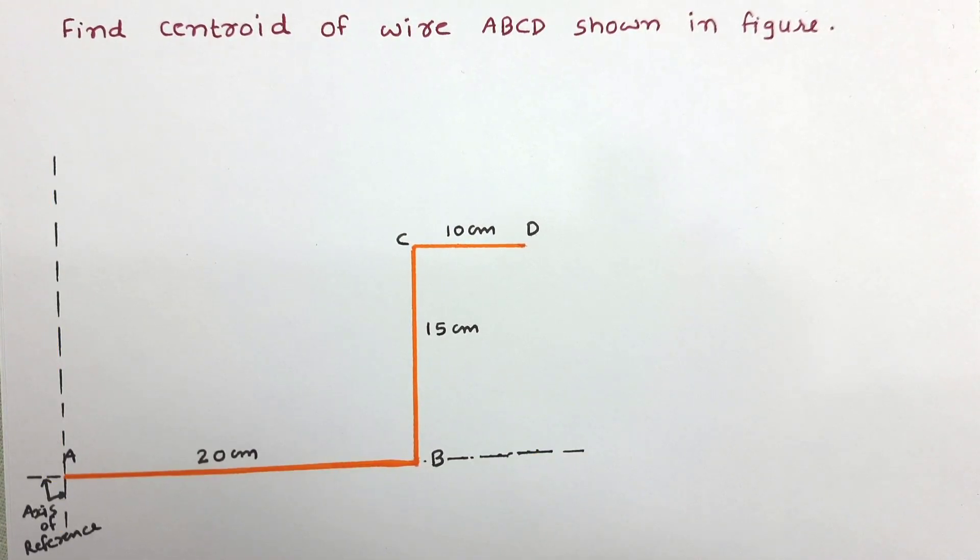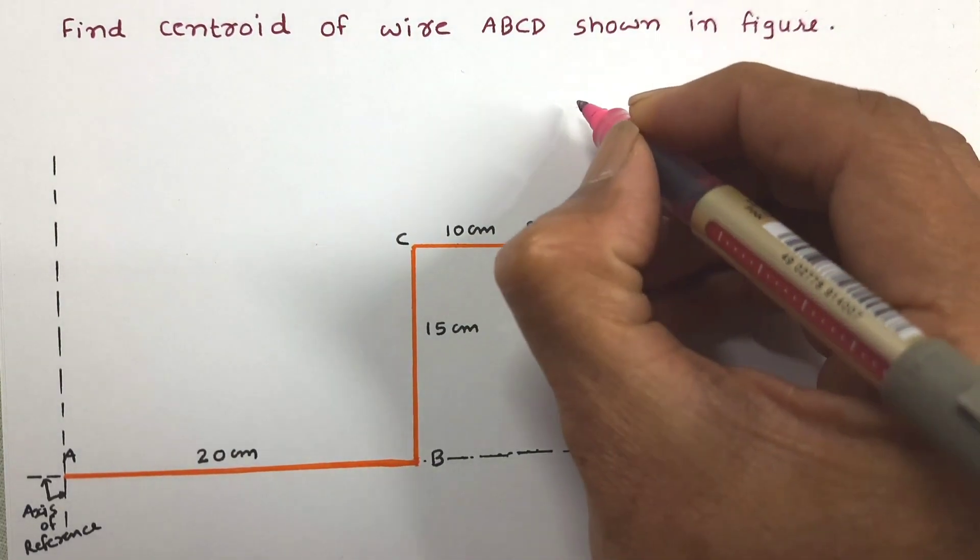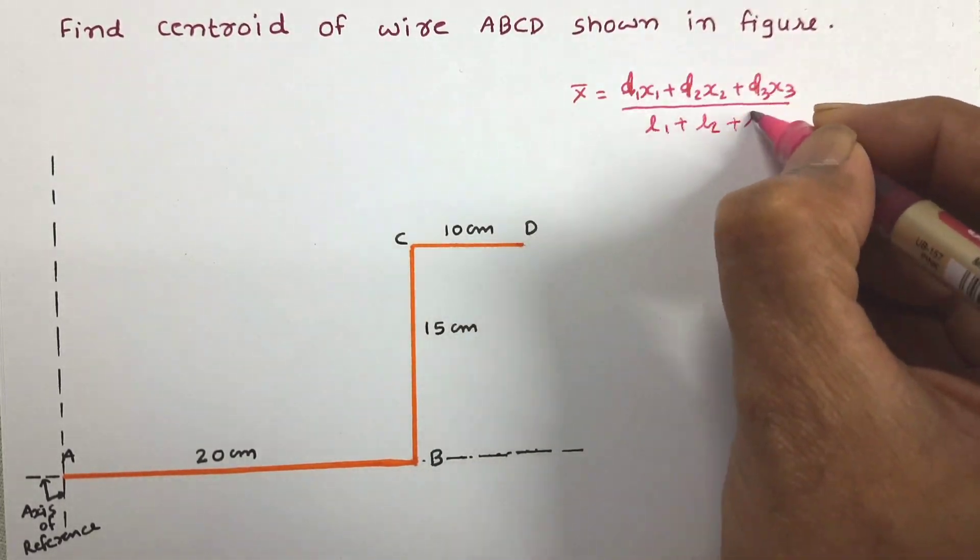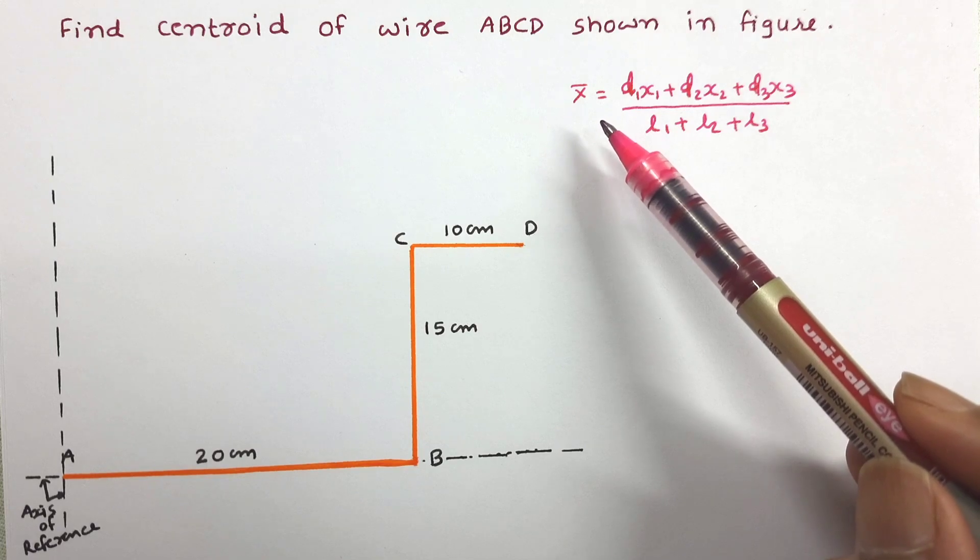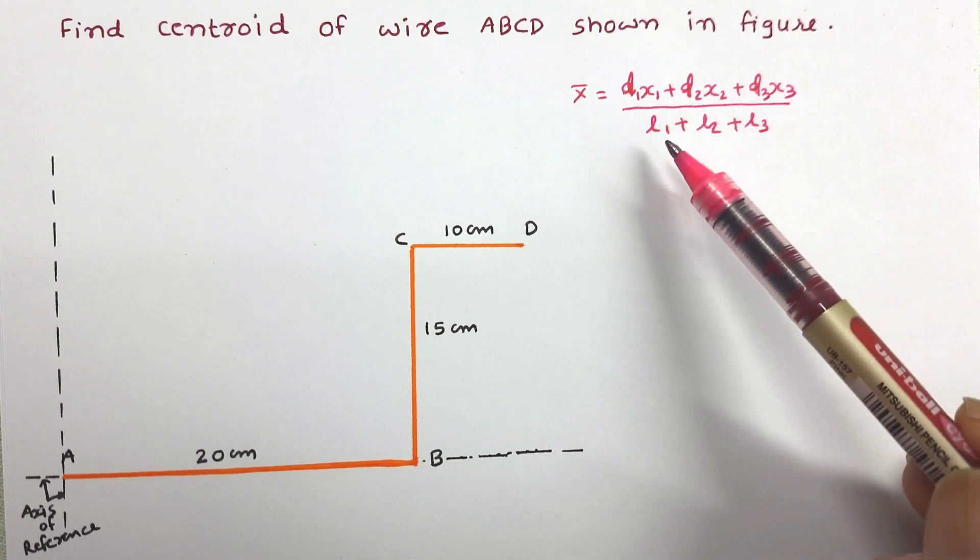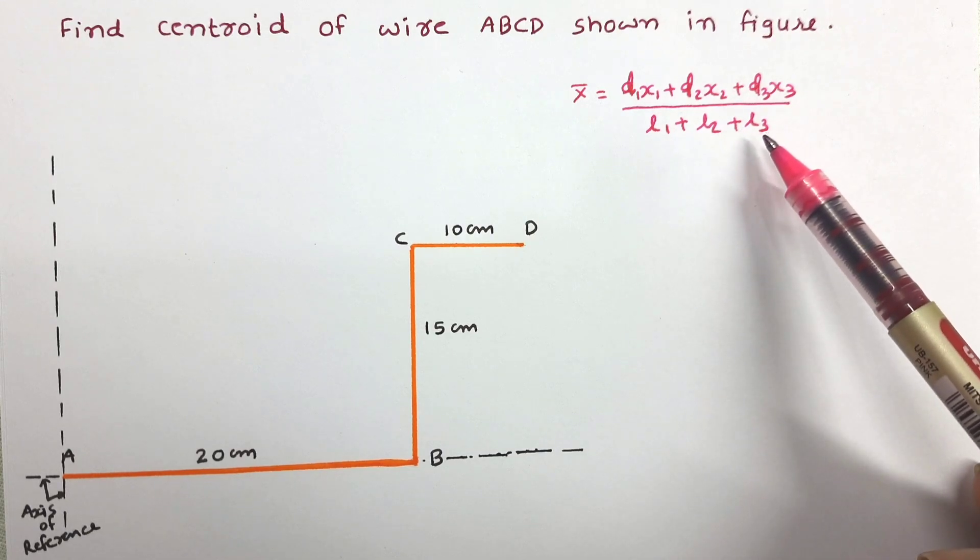To determine the centroid of this composite linear element, we have to use the equation. So let us write the equation to determine x̄ and ȳ. We will start with x̄ first. The equation of x̄ is l₁x₁ + l₂x₂ + l₃x₃ divided by l₁ + l₂ + l₃.